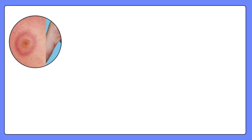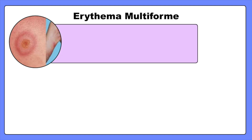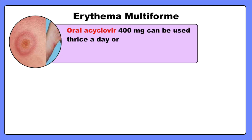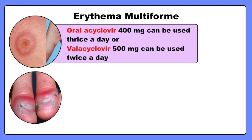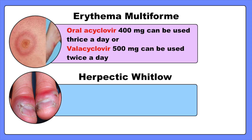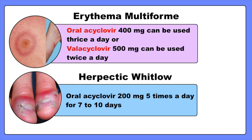In cases of erythema multiforme associated with HSV infections, oral acyclovir 400mg can be used thrice a day, or valacyclovir 500mg twice a day. To treat herpetic whitlow, oral acyclovir 200mg is used 5 times a day for 7–10 days.